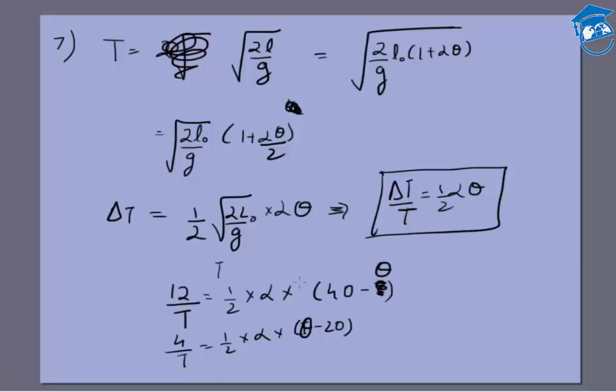You can divide these two. What you'll get is (40 - θ)/(θ - 20) equals 3, which gives you θ equals 25 degrees. From that itself you can see that the answer should be option 1.